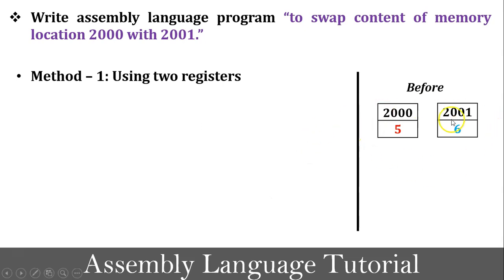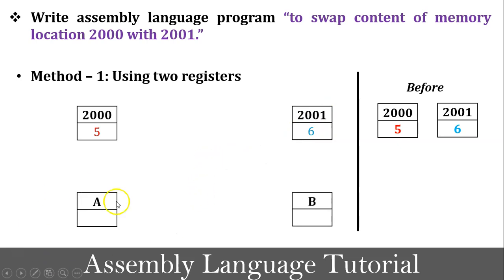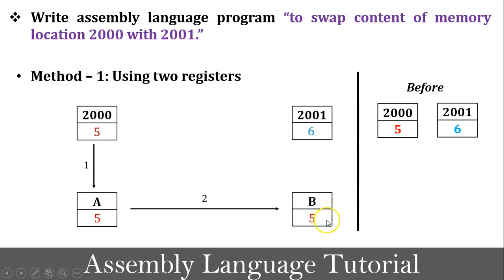As per the program definition, two different values are stored at memory locations 2000 and 2001 — value 5 at 2000 and value 6 at 2001. In Method 1, I use two registers: accumulator A and general-purpose register B. In step 1, value 5 is copied into the accumulator from memory location 2000. In step 2, the content of the accumulator is copied into register B, so 5 is stored in register B.